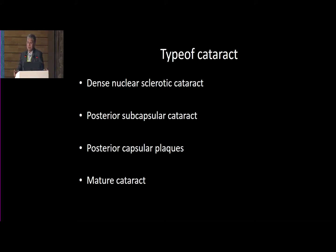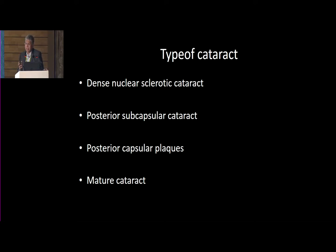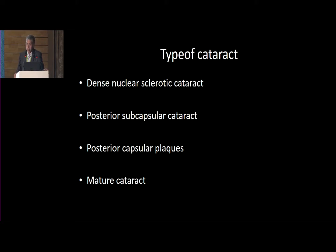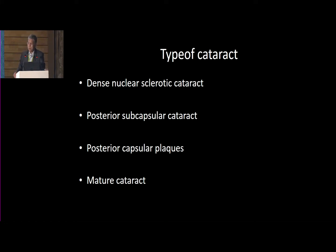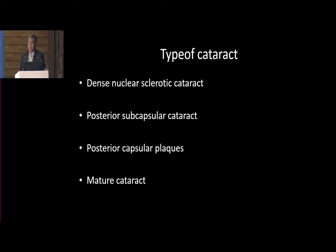The types of cataract which occur are slightly different from normal senile cataract. You can have a dense nuclear sclerotic cataract where the nucleus is extremely hard. You can have a posterior subcapsular cataract, because that's the place where the oil or the gas comes in contact with the posterior capsule. More importantly, you can have posterior capsular plaques, and you can have a mature cataract. Remember, if you have a mature cataract after pars plana vitrectomy, always suspect a lens touch.